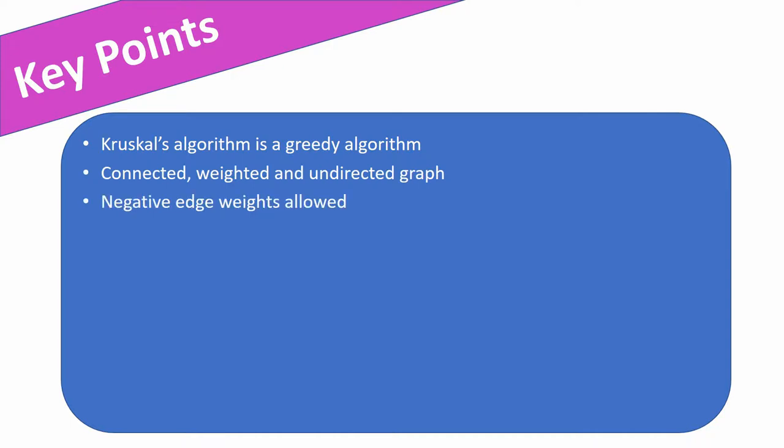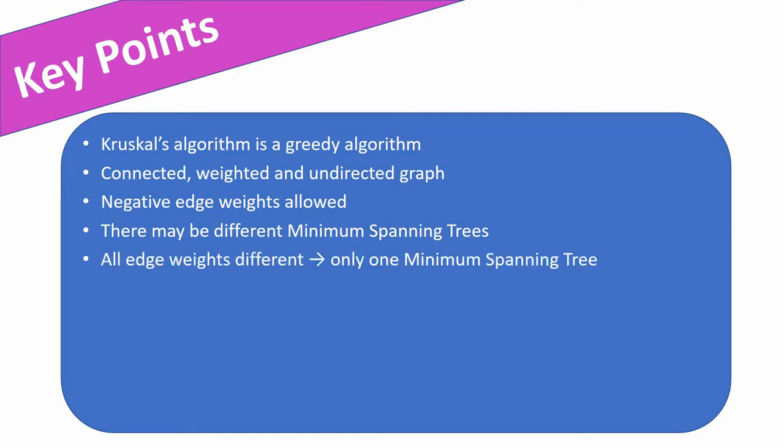Kruskal's algorithm works also if the graph contains some edges with a negative weight. In general, the minimum spanning tree is not unique. So there can be different minimum spanning trees for a graph. But if you have a graph where all edge weights are different, then you can be sure that there is exactly one minimum spanning tree.